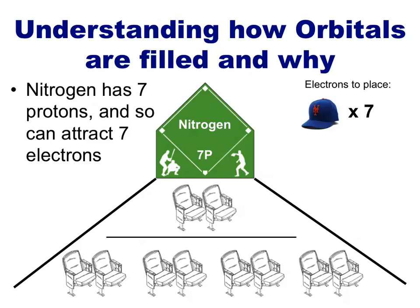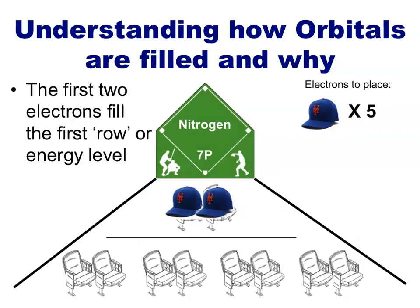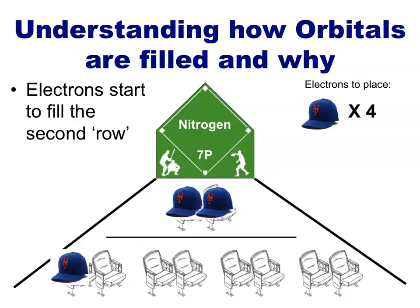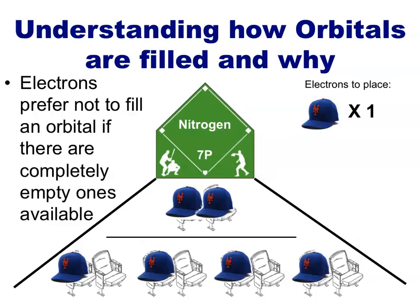Let's see how these orbitals are filled with an example atom. We'll pick the element nitrogen. Nitrogen has seven protons, and so we can draw a total of seven electrons to this atom. The first two electrons would try and occupy the best seats and fill the first energy level — these are the seats closest to the nucleus. The remaining five electrons will start to fill the second energy level. Just as you might prefer spacing out rather than sitting next to strangers if there are seats available, so too do electrons occupy empty orbitals instead of half-filled orbitals. So we can place four of the remaining five electrons, one in each of these four orbitals.